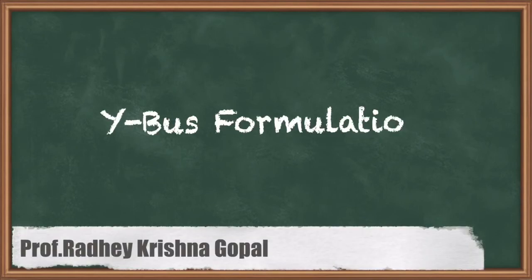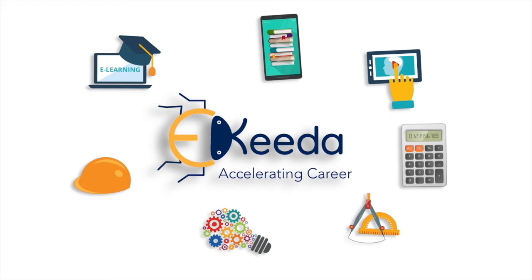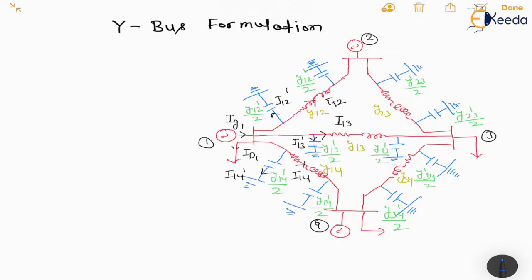Hello friends, now we are going to study Y-bus formulation. We have a four-bus system: bus number one, bus number two, bus number three, and bus number four. This is an interconnected system. Now we need to find Y-bus, so how will we formulate the Y-bus?